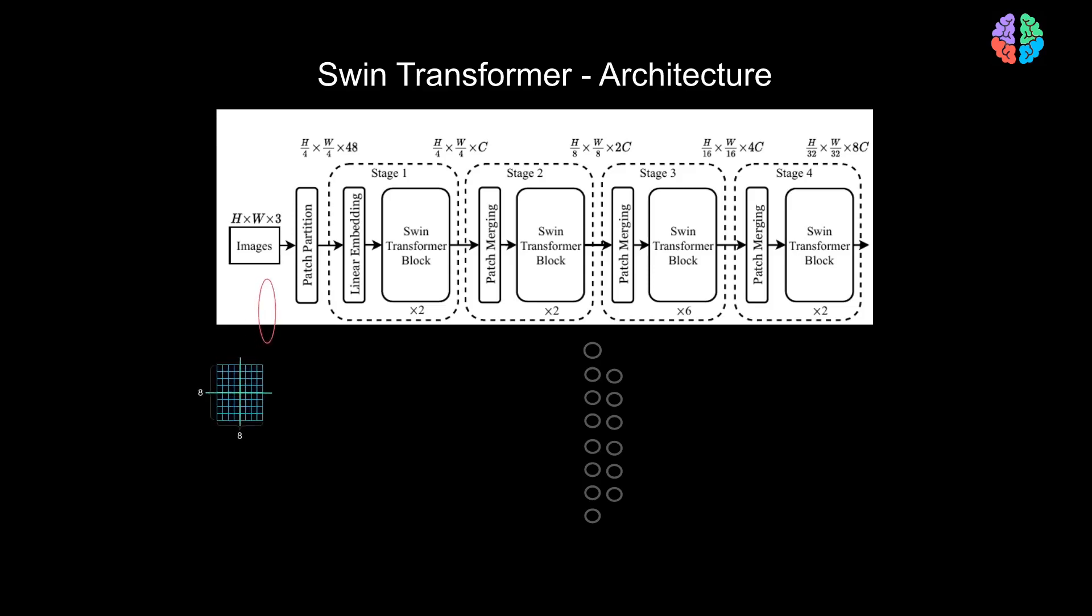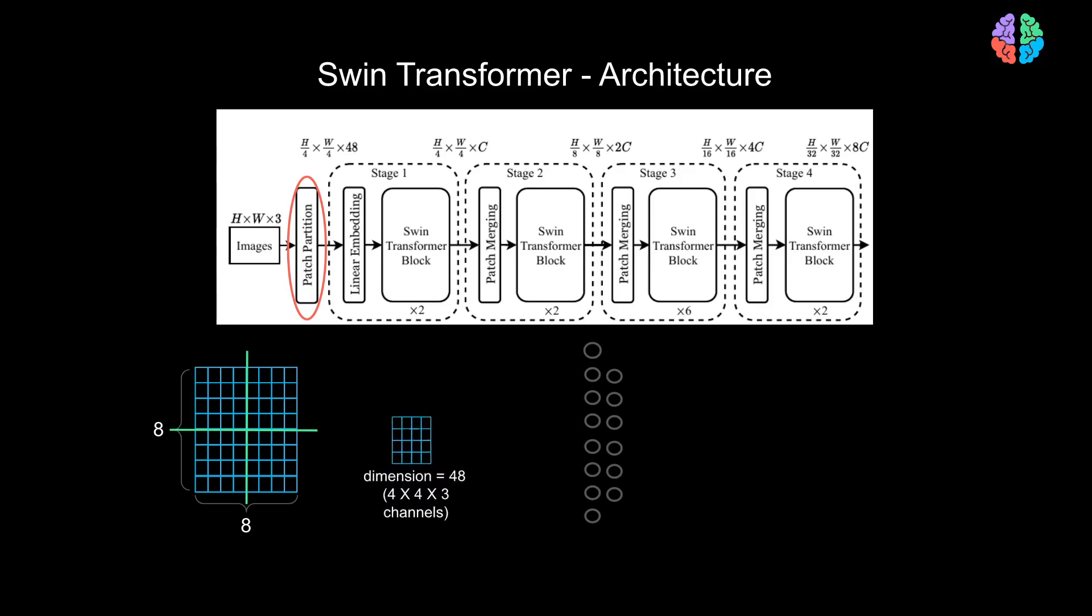First comes patch partition. As the name suggests, the image is partitioned into several small patches. An image of size height by width with three channels is divided into non-overlapping patches or tokens. In the paper, they use a patch size of 4 by 4. So the dimension of each patch becomes 4 by 4 by 3 which is equal to 48 dimension.